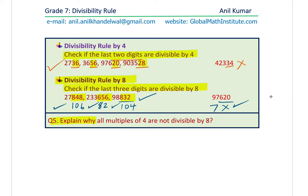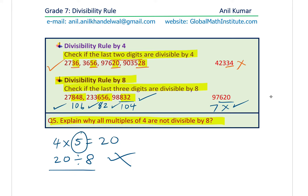Question 5: Explain why all multiples of 4 are not multiples of 8. For example, 4×5=20. If we divide 20 by 8, it doesn't work — 8×2=16 and 8×3=24. Since 5 is not a factor of 8, it cannot work out.